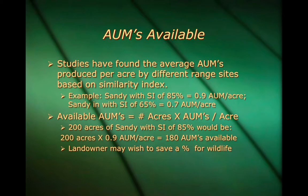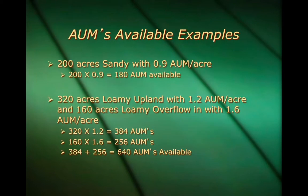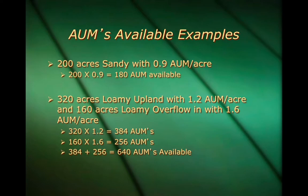Here are a couple of examples of how to determine the AUMs available. First: 200 acres of sandy at 0.9 AUMs per acre — 200 times 0.9 leaves 180 AUMs available for livestock. Another example: 320 acres of loamy upland yielding 1.2 AUMs per acre, and 160 acres of loamy overflow with 1.6 AUMs per acre. Since there are two range sites, multiply them separately then add: 320 times 1.2 equals 384 AUMs, and 160 times 1.6 equals 256 AUMs, totaling 640 AUMs available for livestock to graze.